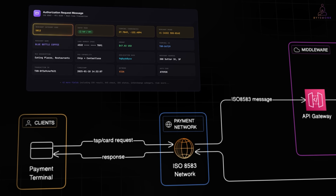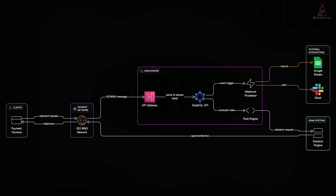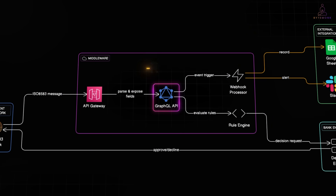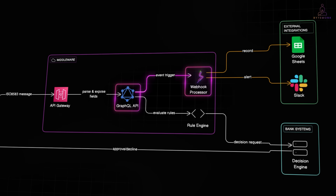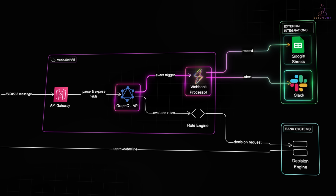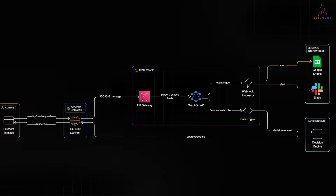The data you get access to is rich — not just Starbucks $5.40, but the merchant's category code, whether you tapped or swiped, terminal coordinates, sometimes even the merchant's phone number. Most programmable card platforms expose this data through GraphQL instead of REST, so you can query exactly the fields you need. Add webhooks on top of this and you can build real-time automations: Slack alerts for big purchases, automatic expense categorization, real-time sync to Google Sheets — all without polling or waiting for end-of-day batch files like traditional bank integrations.